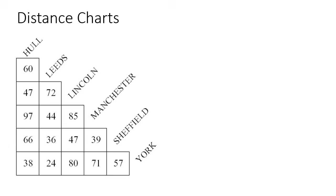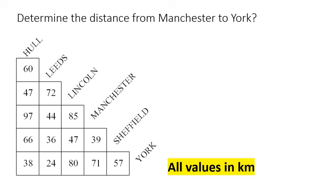In this lesson, we are going to be talking about distance charts. Your teacher might give it a different name, but pretty much it's a diagram that looks like this. All the values that you see in this table are measured in kilometers — for example, 97 kilometers, 36 kilometers.